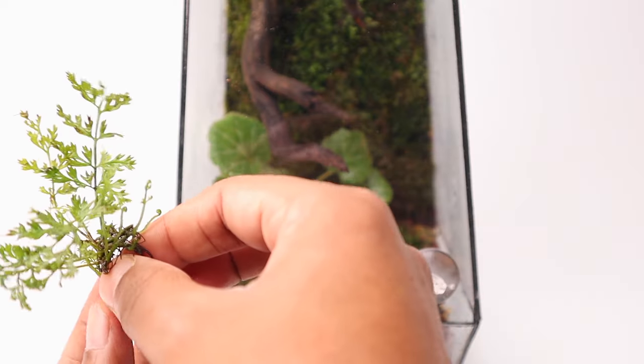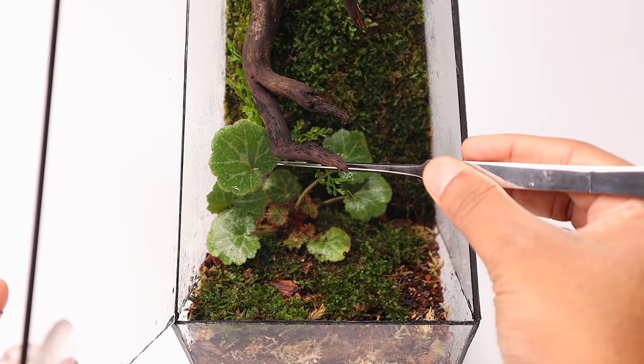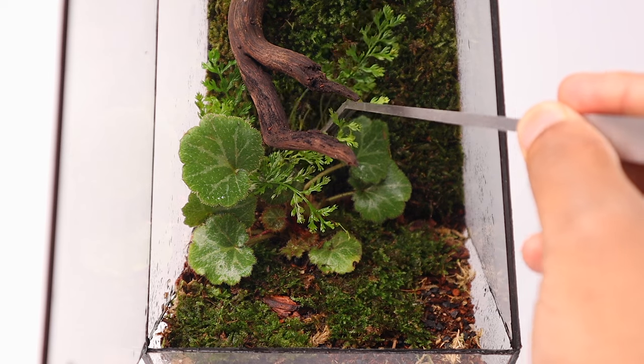Next in line is this mini bolbitis which happens to be one of my favorite plants. I place it behind the begonia and add one more to balance the look.